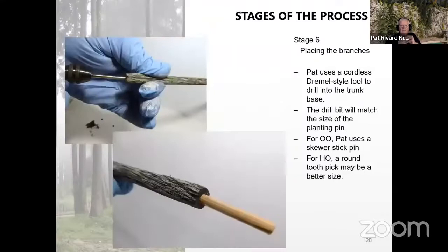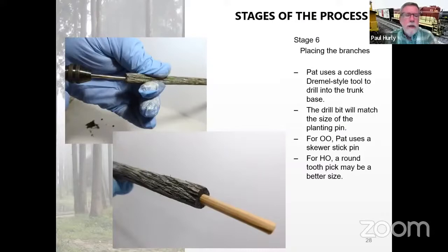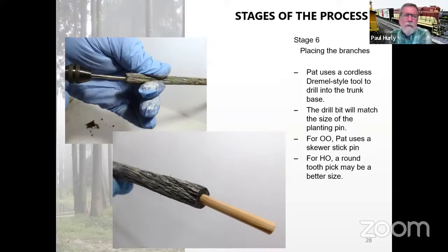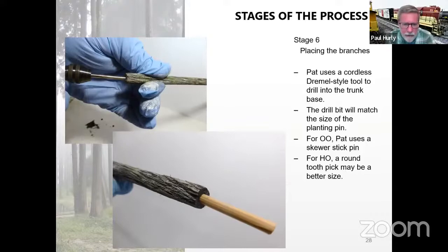Now that we've finished the trunk of the tree, we essentially have an armature that we can start to build the tree structure on. Here Pat is drilling out the bottom with a Dremel tool. In his case he uses skewers, broken off or sawed off, to put in the bottom. Working in a smaller scale, I tend to use small pieces of wire or sometimes small nails in the bottom. This helps hold the tree in place and make it a lot more sturdy. I am very careful about any trees that I put near the aisleway and near the fascia — I make sure they're just out of the way where people are going to be reaching through, but these certainly help with the planting of the tree.